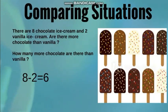Which type of ice cream do we have more of — chocolate or vanilla? Which number is greater, eight or two? Of course it's eight! So we have more chocolate ice cream than vanilla. But how many more chocolate ice cream are there than vanilla? We have eight chocolate minus two vanilla, because 'how many more' means we need to subtract. Eight minus two equals six. So we have six more chocolate ice cream than vanilla ice cream.